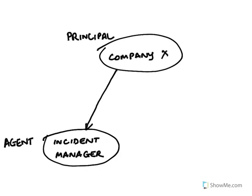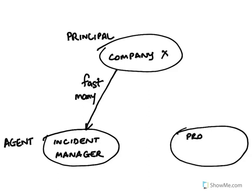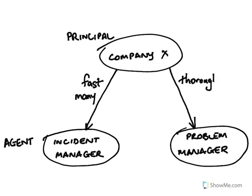In the case of the incident manager, that is probably to resolve incidents fast and as many as possible. However, if we have another agent — the problem manager — who is in control of the problem management process, he or she has a different arrangement with the principal, company X. For them, thoroughness and getting rid of root causes is extremely important. Speed is probably not that big a deal, nor are numbers — they are not really counting or timing.